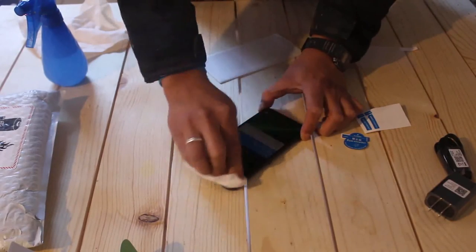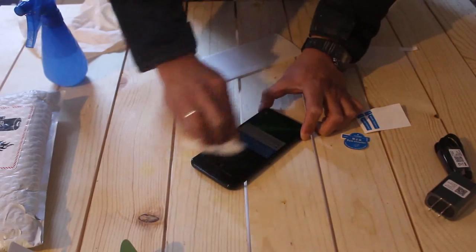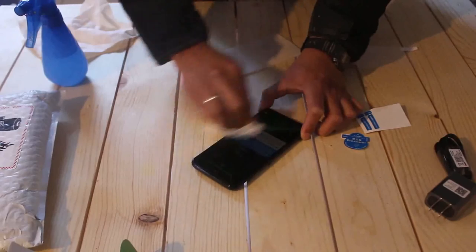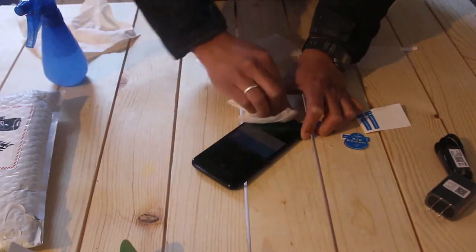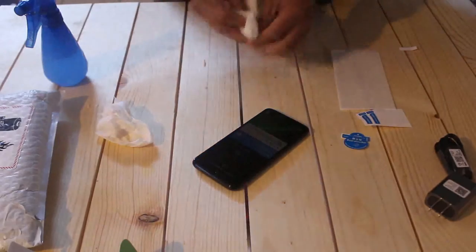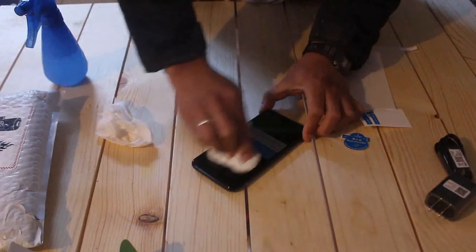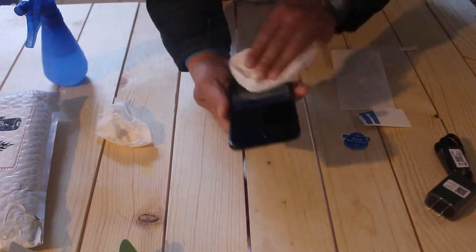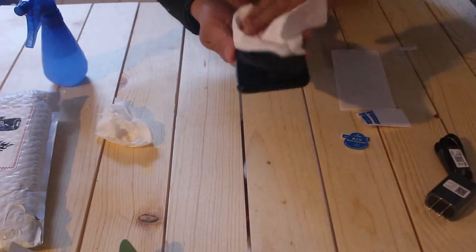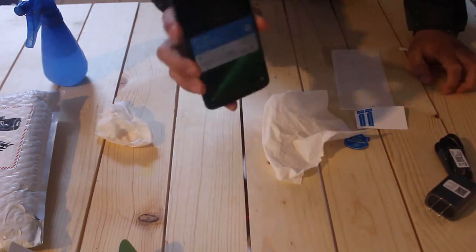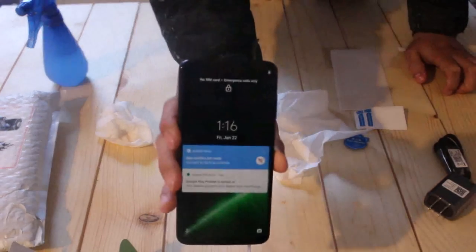After that, I always do another spray with alcohol and a wet wipe, and rub it onto the privacy screen protector that I just applied. Then I just clean it that way and it turns out good. I'm going to show you how it looks - there you go, no bubbles, no dust inside.